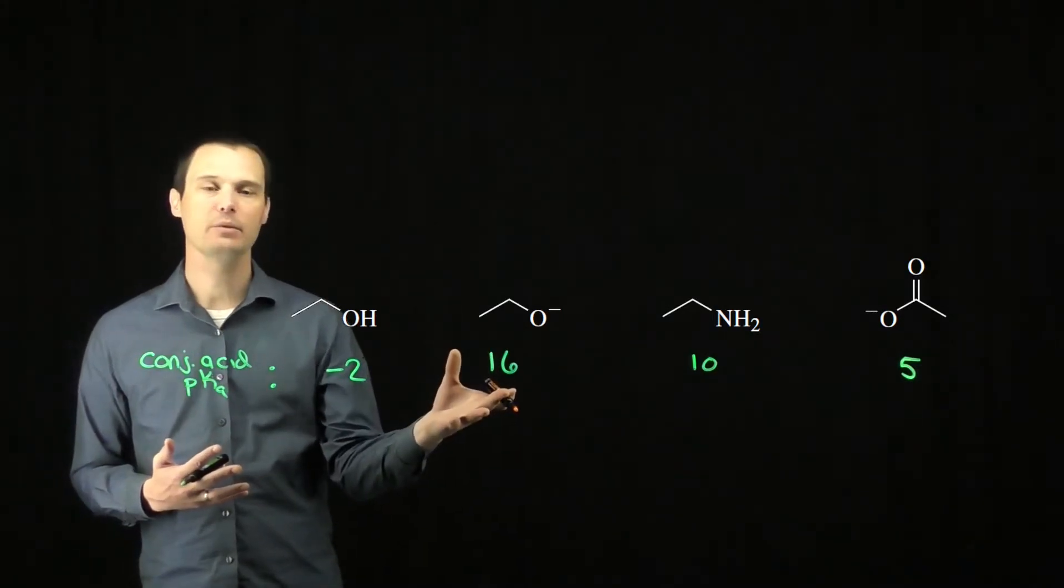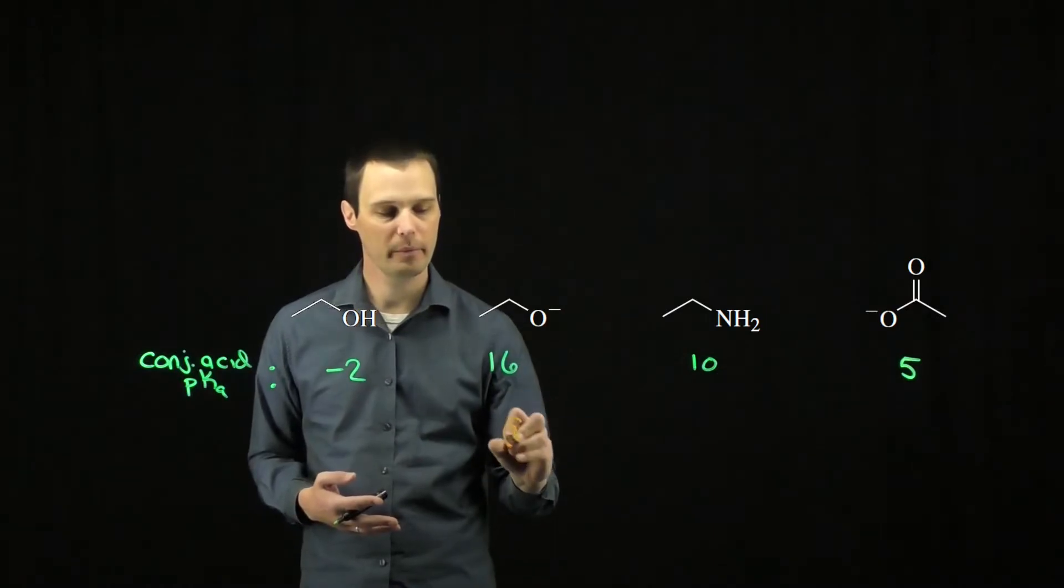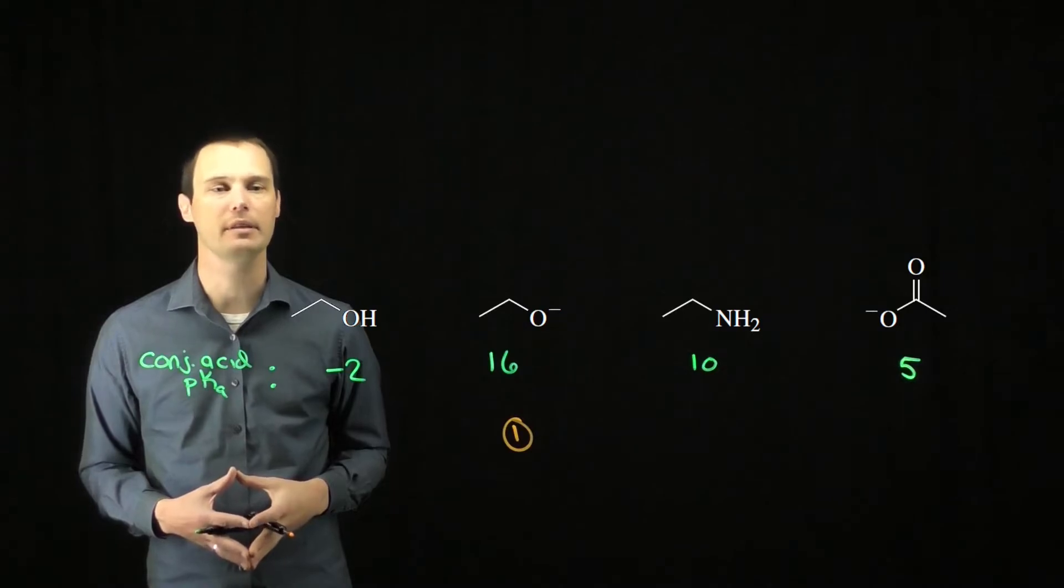Therefore, the weakest acid would be the alcohol, which means the alkoxide would be the strongest base, which means that this one would be my number one most nucleophilic species. The alkoxide will be the most nucleophilic in this list.